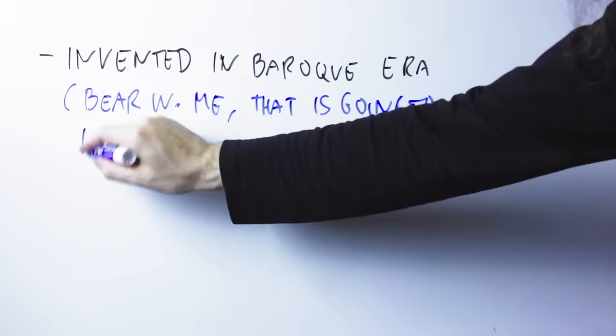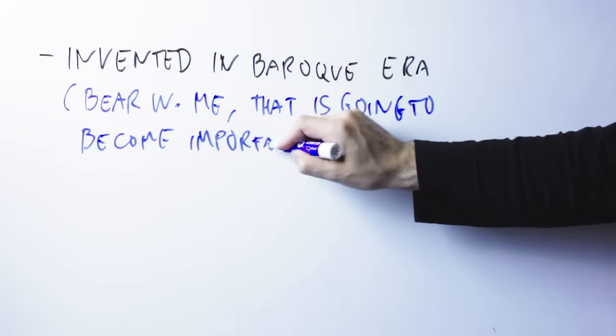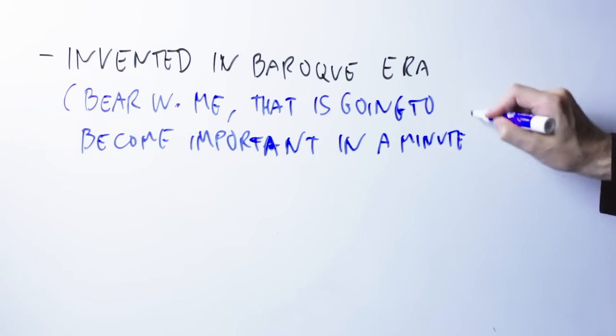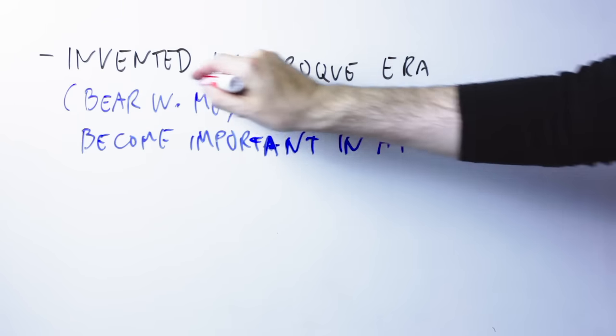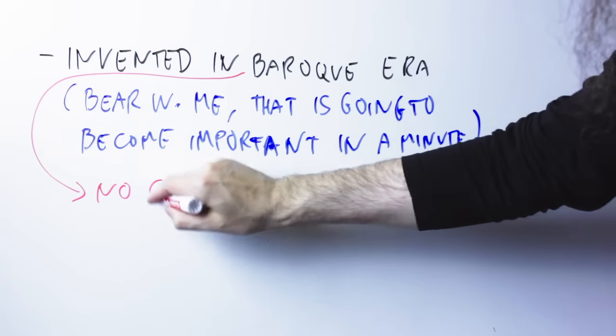Our story starts in the 18th century, in the Baroque era, when those bigwig Baroque musicians were making music in a completely different way than how we do it today, because chords were not invented yet.